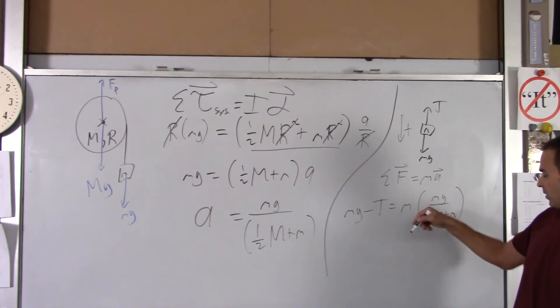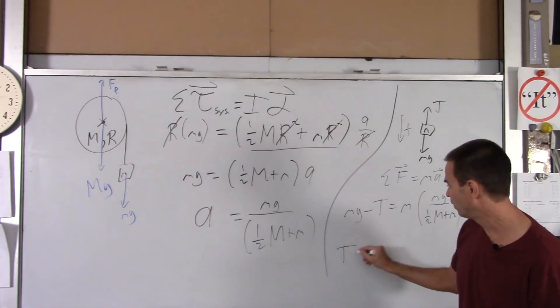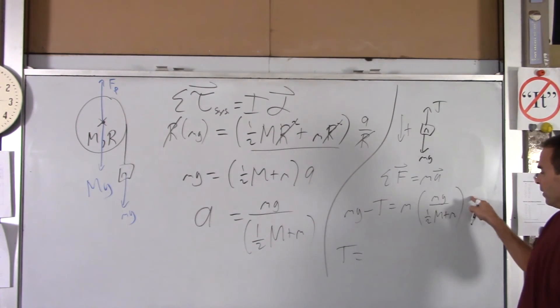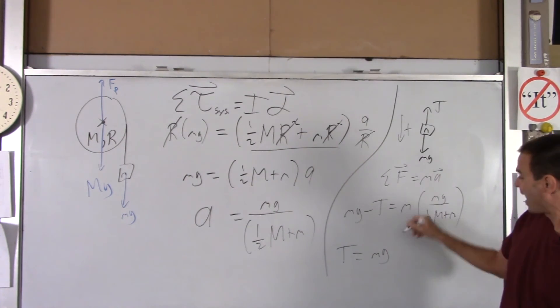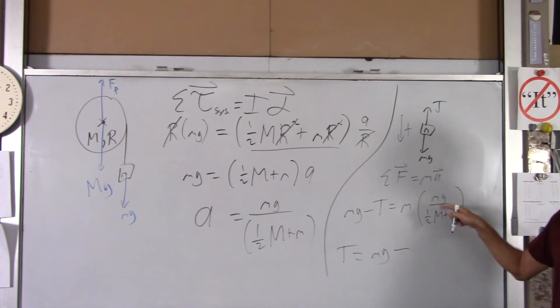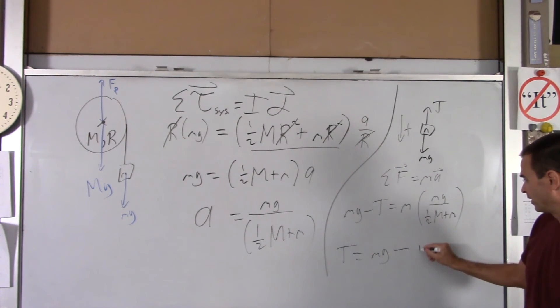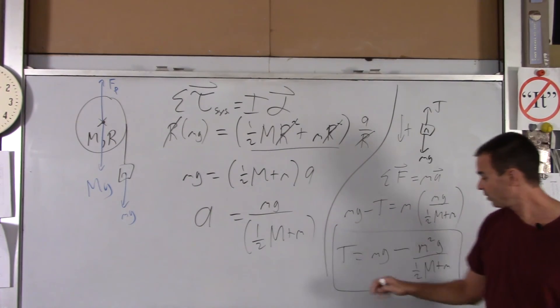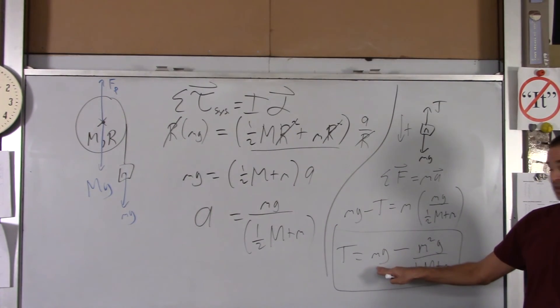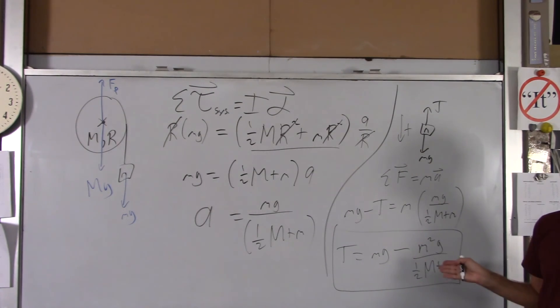And then, now I'm not going to do too much math with this, but I will say this. If you move T over to there, and you move all this over to there, you get little mg minus this expression, which if you put the m in there, it'd be little m squared g over one-half big M plus little m. So that would be the tension in that string, which is clearly less than mg, because you've got mg minus something.